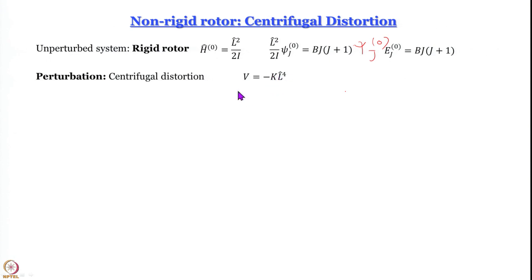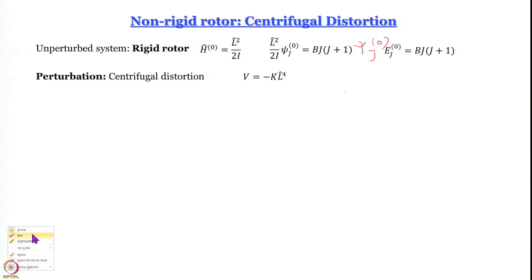The perturbation is centrifugal distortion. From classical mechanics we know centrifugal distortion is associated with a potential proportional to the fourth power of angular momentum. So we construct the operator V = −k·L⁴.